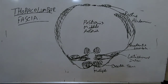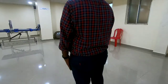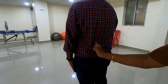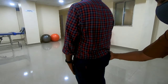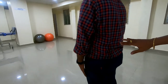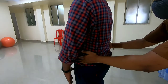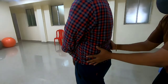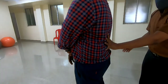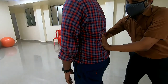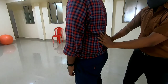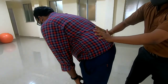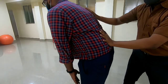Using a model: the thoracolumbar fascia is diamond-shaped, giving rise to latissimus dorsi and gluteus maximus. From the side view, it goes anteriorly and attaches to the abdominal muscles. The significance is that when the abdominal muscles contract and flex, this supports the lower back. The more contraction of the abdominal muscles, the more support to the lower back.